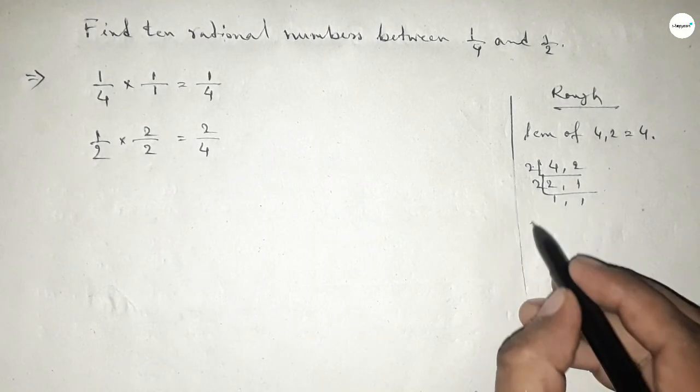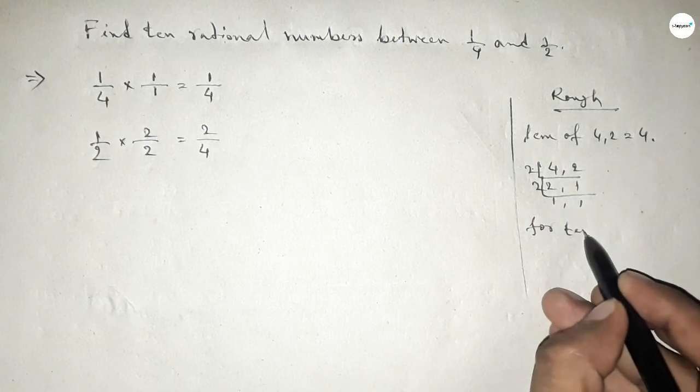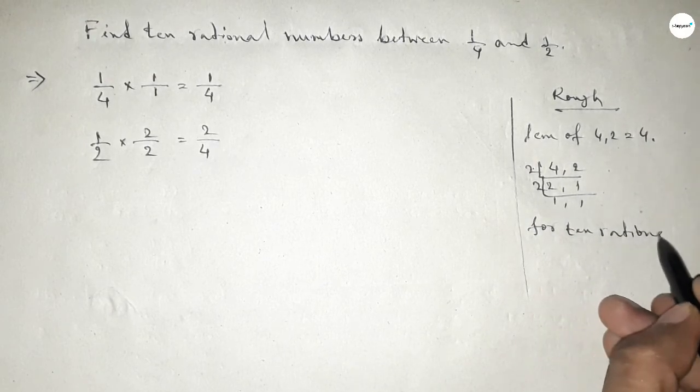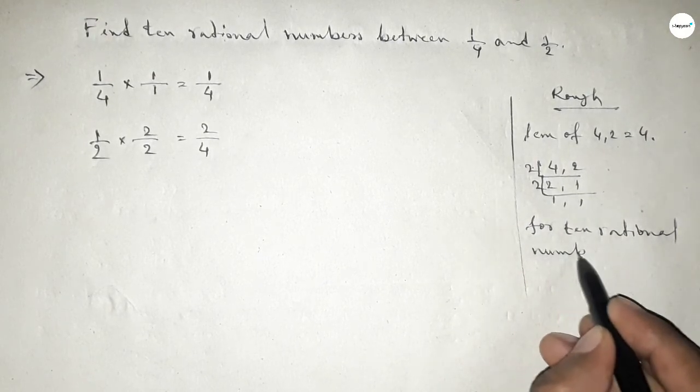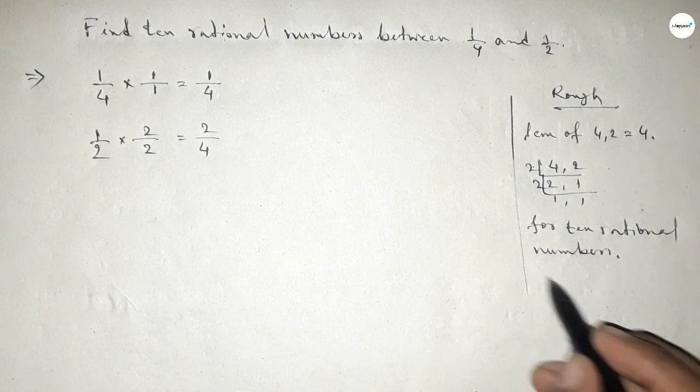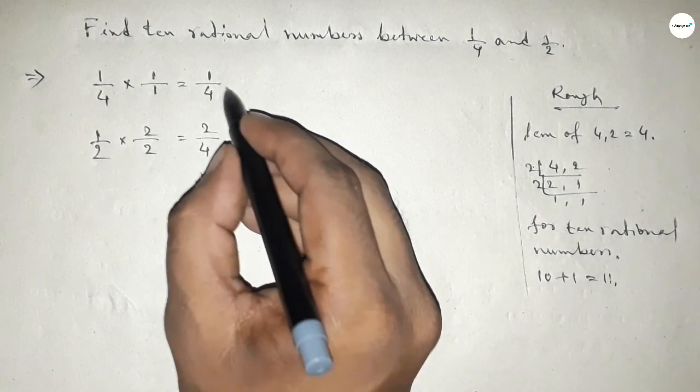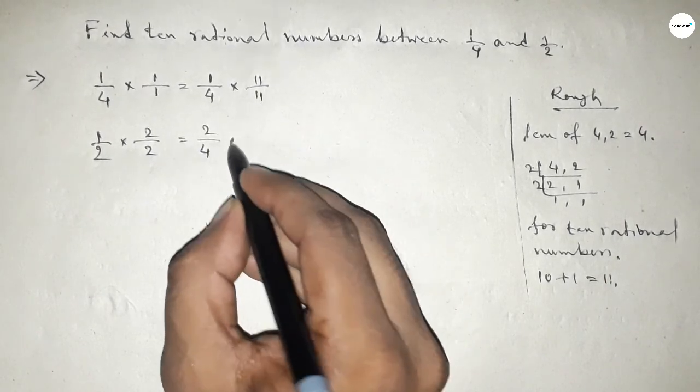Now for finding 10 rational numbers between any 2 numbers, we have to follow this method. We should multiply both numbers by 10 plus 1 equals 11. Multiply both numbers by 11 this way.